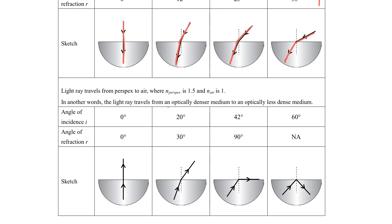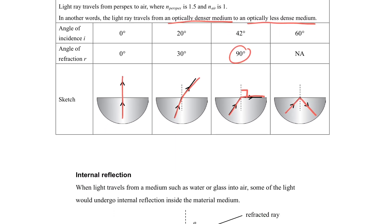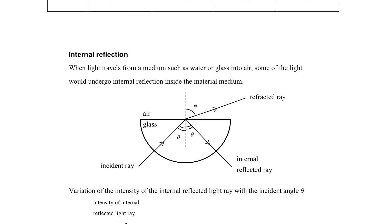Now the light travels from the optically denser medium to an optically less dense medium. You can see that the light will bend away from the normal. When the angle of incidence keeps on increasing, the angle of refraction will keep on increasing. But what makes it special is that at a particular moment, the light will bend and go along the boundary. We say that at that moment, the angle of refraction is equal to 90. And then when we further increase the angle of incidence, the light will go back and bend towards the direction of reflection. So we call this total internal reflection.